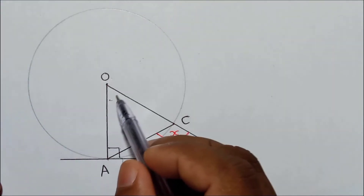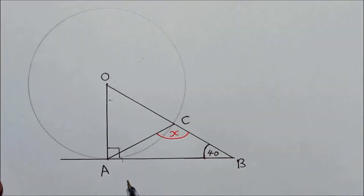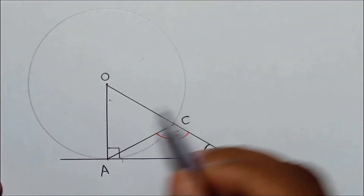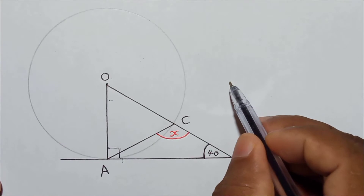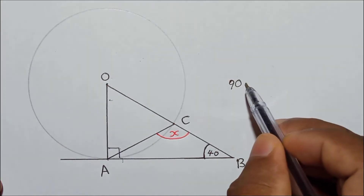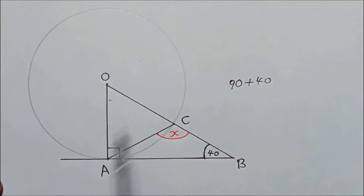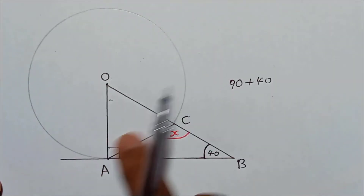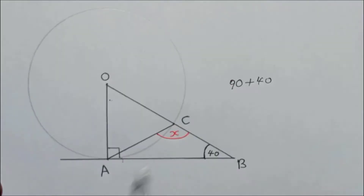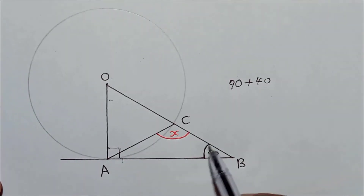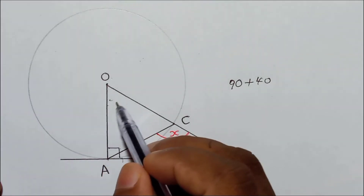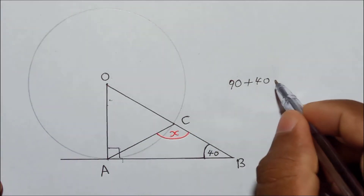Then you can find angle AOC. In triangle AOB — forget about the other line, just this big triangle AOB — 90 degrees plus this angle plus this angle must equal 180 degrees.